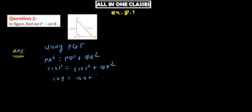13² = 12² + QR². 169 = 144 + QR². If I minus 144 from both sides, 169 minus 144 = QR². 25 = QR². QR = 5.